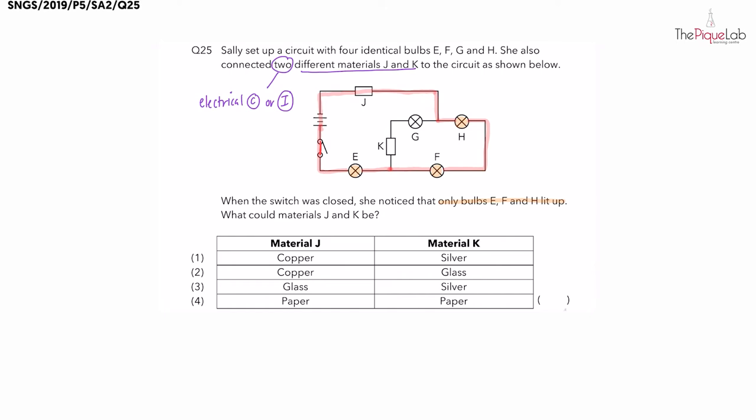So this pathway that we just traced, which includes material J, is it an open or closed circuit? It must be a closed circuit allowing electricity to flow through the bulbs causing them to light up. So what does that tell you about material J? Does it allow electricity to flow through? Yes. So is it an electrical conductor or insulator? It must be an electrical conductor.